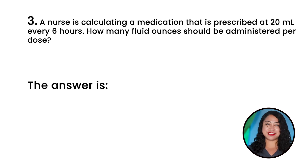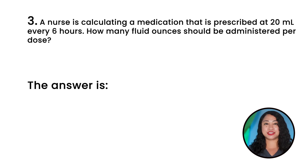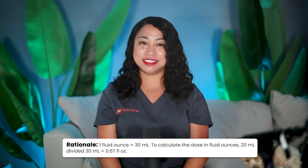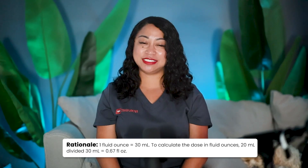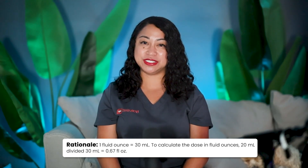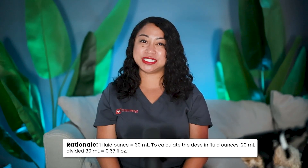Question 3: A nurse is calculating a medication prescribed at 20 milliliters every 6 hours. How many fluid ounces should be administered per dose? The correct answer is 0.67 fluid ounces. Rationale: 1 fluid ounce equals 30 milliliters. Divide 20 milliliters by 30 milliliters to get 0.67 fluid ounces.